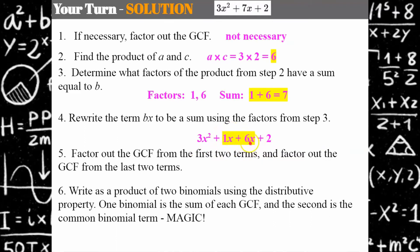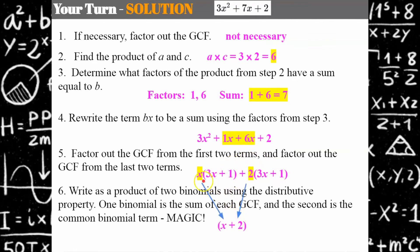Now factor out the GCF from the first two terms: x is the greatest common factor, giving x times 3x plus 1. The second two terms have a greatest common factor of 2, giving 2 times 3x plus 1. Once again, there's the magic — the same binomial appears in both. Our first binomial is the GCFs: x plus 2, and the common factor is 3x plus 1. So factored: x plus 2 multiplied by 3x plus 1.